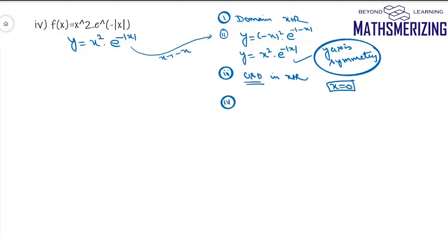Now the fourth step is to find points of intersection. So if I'll put x as 0, I'll get y equals 0 and there is no other point of intersection. So the only point where it will intersect is 0, 0.